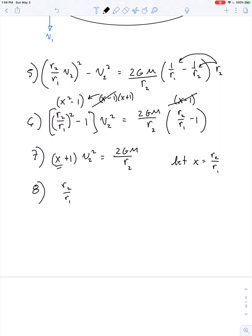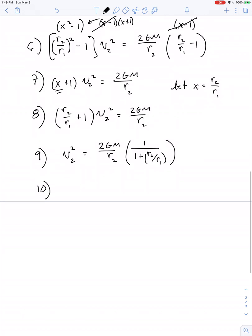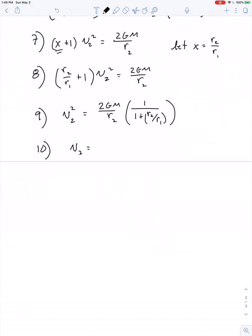x really is R2 over R1. So R2 over R1 plus 1 times V2 squared is 2 GM divided by R2. So V2 squared is equal to 2 GM over R2 times 1 over 1 plus R2 over R1. So V2 is equal to the square root of 2 GM over the quantity R2 times 1 plus the ratio R2 over R1.